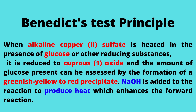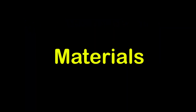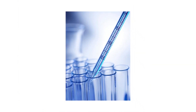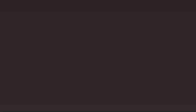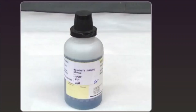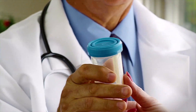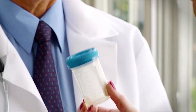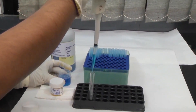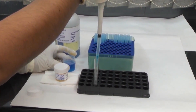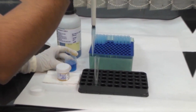Materials: boiling test tubes, graduated pipettes, beakers, and Benedict's solution. Procedure: the urine sample is collected into a clean container. Take 5 ml of Benedict's solution into a boiling tube.